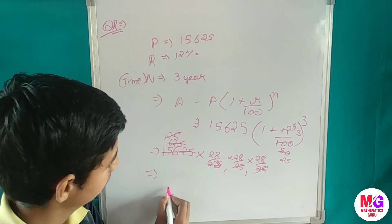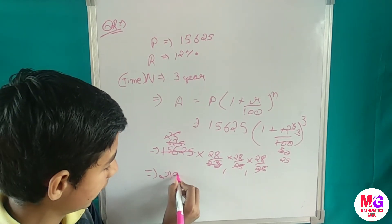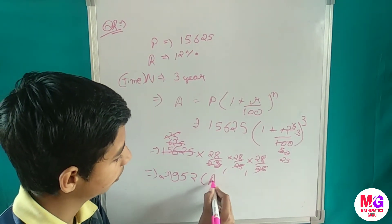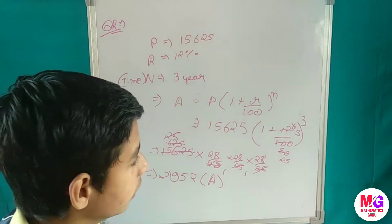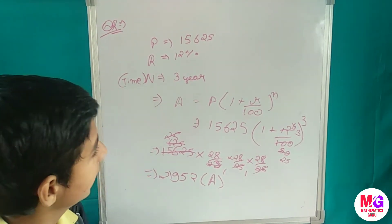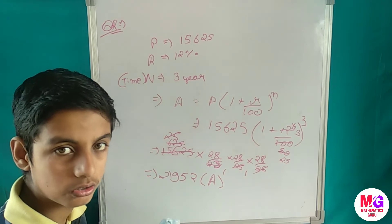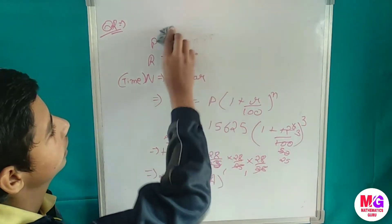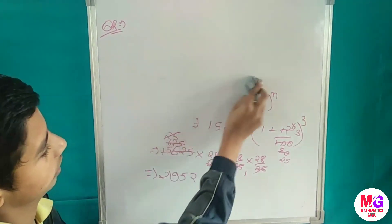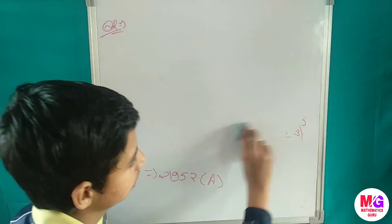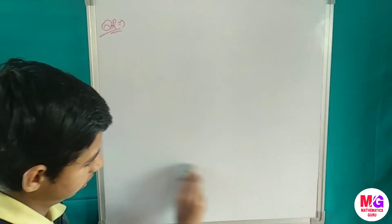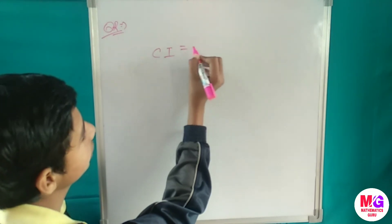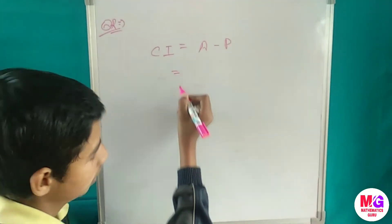After multiplying 28 × 28 × 28 we get 21952. So our amount is 21952 rupees. Now we have to find the compound interest using the formula: Compound Interest equals Amount minus Principal. If you did not understand any step, you can go back in the video and review.